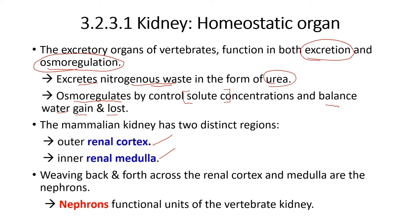Structures that run back and forth across the renal cortex and medulla are called nephrons. Nephrons are the functional units of the vertebrate kidney.